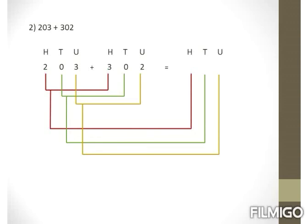Second horizontal example: 203 plus 302. We draw horizontal lines joining units to units, tens to tens, and hundreds to hundreds. Units: 3 plus 2 is 5. Tens: 0 plus 0 is 0. Hundreds: 2 plus 3 is 5. Our final answer is 505.